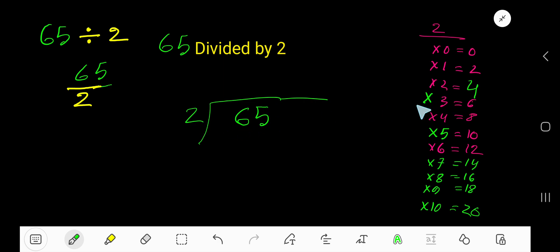Okay, 2 goes into 6 how many times? 3 times, write 3. Now multiply. 3 times 2, 6.